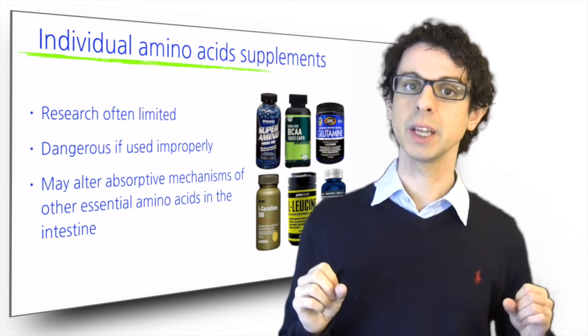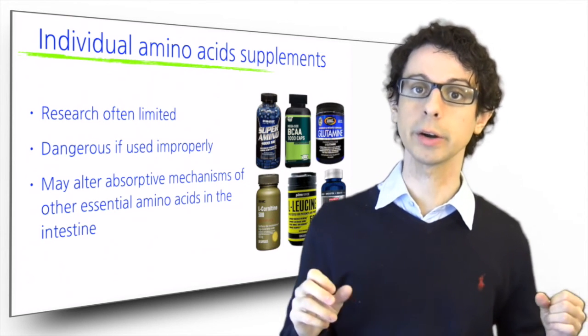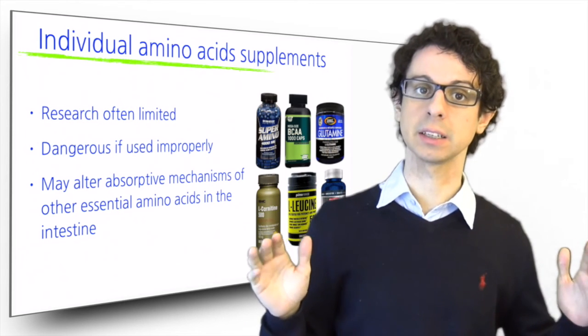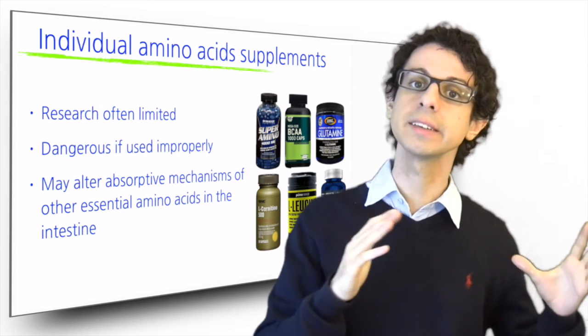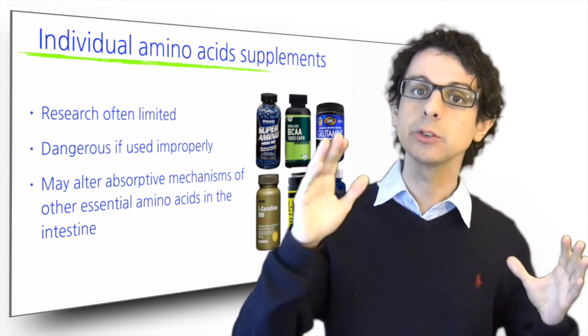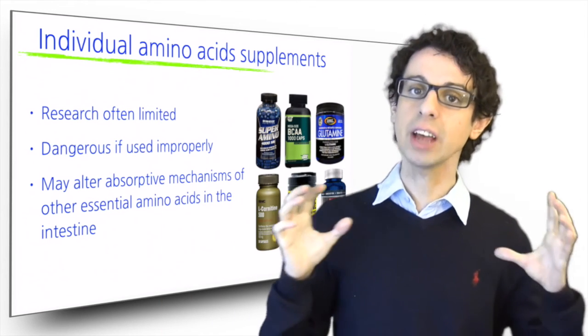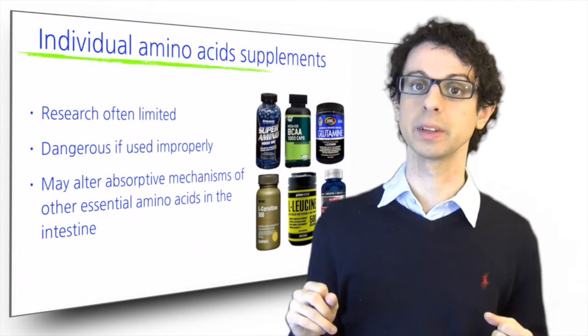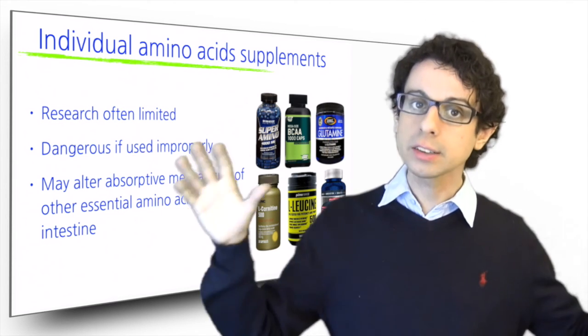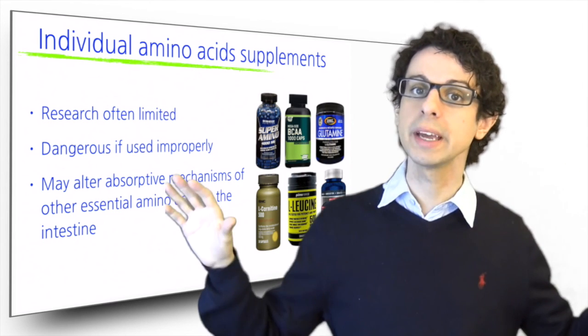The biggest problem with single amino acids, aside from the fact that they are very expensive and their taste is horrible, is that they may alter absorptive mechanisms in the intestine. Amino acids often share the same carriers for absorption, as if they all had to go through the same door to be absorbed. If you have large excess of just one or a few, chances are that the other will not be absorbed efficiently. They will be lost among the excess of one single amino acid, and so absorption of all the remaining essential amino acids may be impaired.